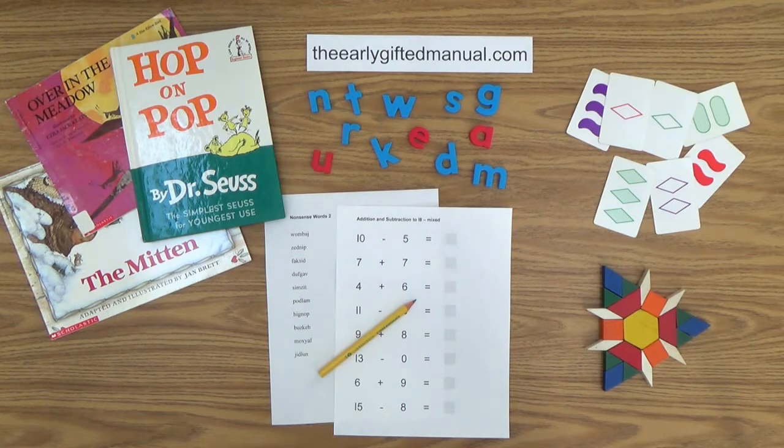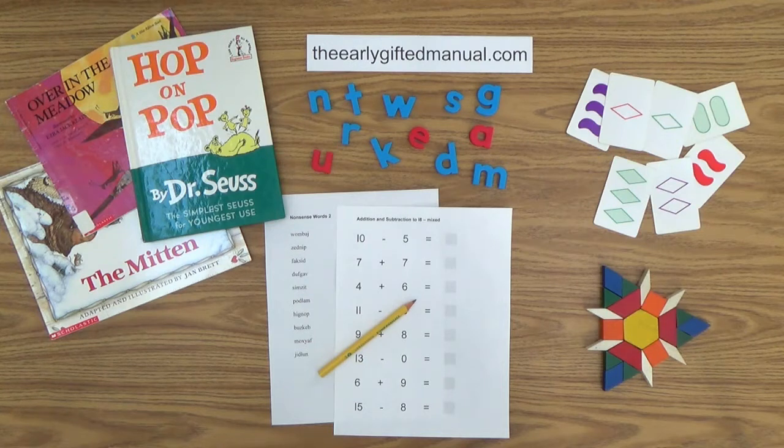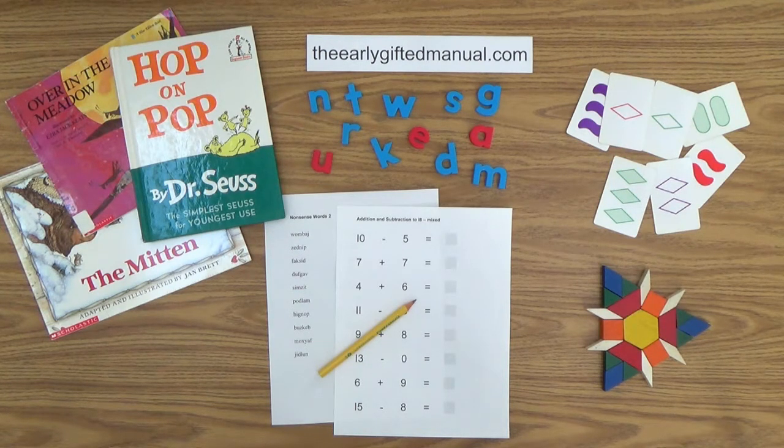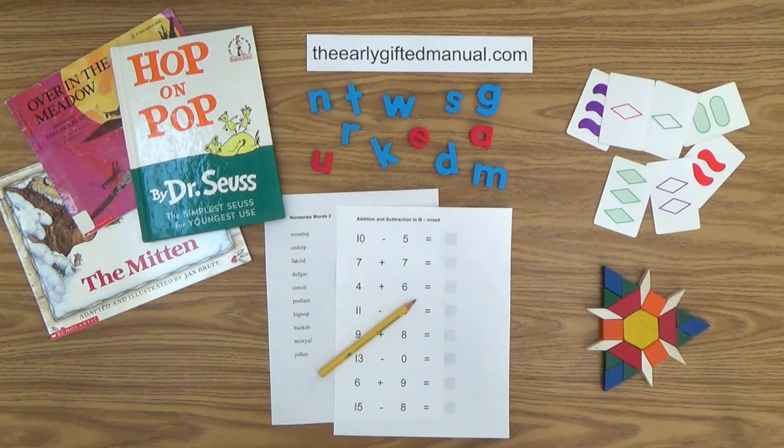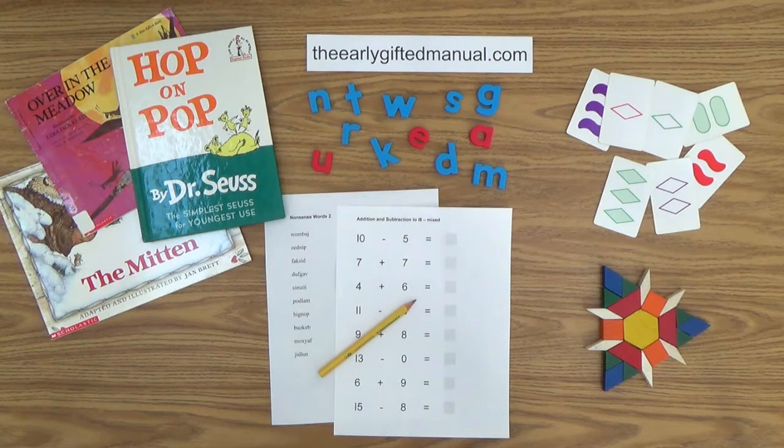As the video lessons are designed to work in conjunction with the program on my website, I ask you to at some point click on the URL link in the description box below and this action will take you to theearlygiftedmanual.com. By doing that, you will be able to put this lesson and all of the video lessons here on my channel in the proper context of the total program that I am presenting to you and your child.